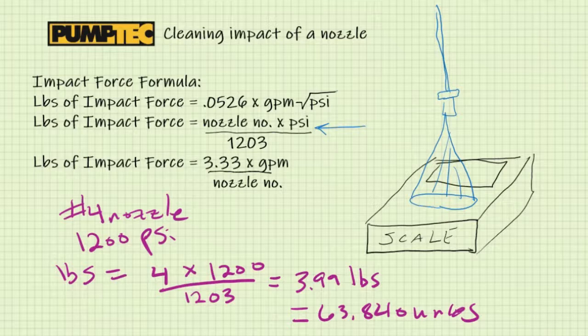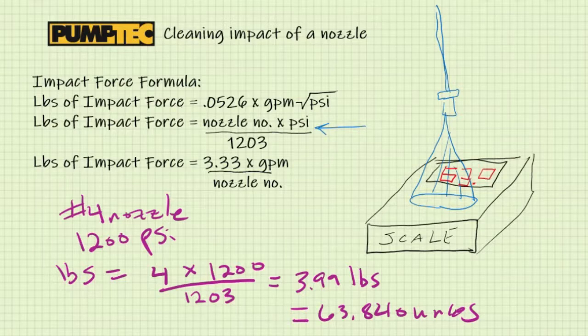So in this case, if you spray the nozzle, the number four nozzle at 1,200 psi onto the scale, you will read 63.8 ounces.